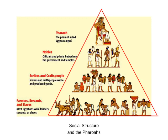Next video in our look at ancient Egypt, we're going to talk about the social structure of ancient Egypt. As you can see from the graph posted here, there were four main groups: the pharaoh at the top, then the nobles, then the scribes and craftspeople, and finally the farmers, servants, and slaves.